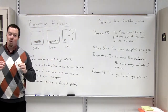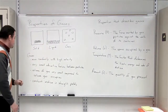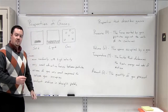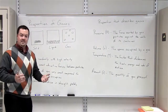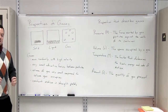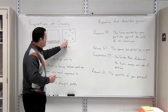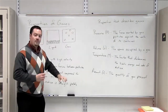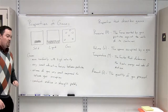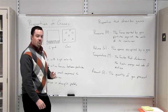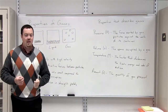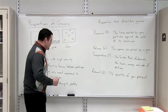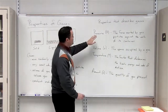Gas particles have very small attractive forces between them, so the particles of a gas don't have very many attractive forces between multiple particles as a solid and a liquid do. Another property is that the volume that the gas particles actually make up is extremely small compared to the volume that the gas occupies — there is so much space in between the particles. Also, gas particles are moving in constant motion in straight paths until they collide with another gas particle or with the surface of the container they're in.